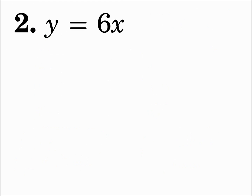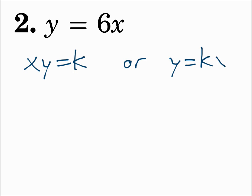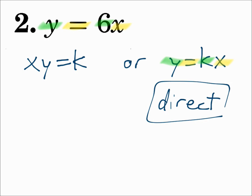Number 2: y equals 6x. Let's test inverse variation — is this in the form x times y equals k? It doesn't look like it; we're not multiplying x and y together, we're multiplying x and 6 together. What about y equals k times x? This definitely looks like that form: y equals, k is 6, then x. This is definitely direct variation.